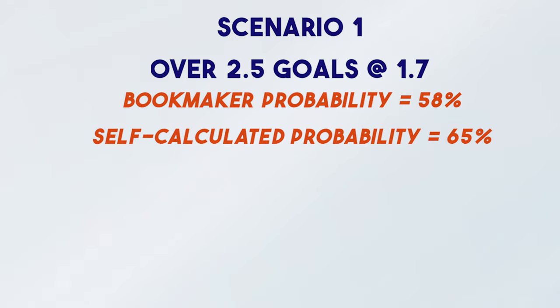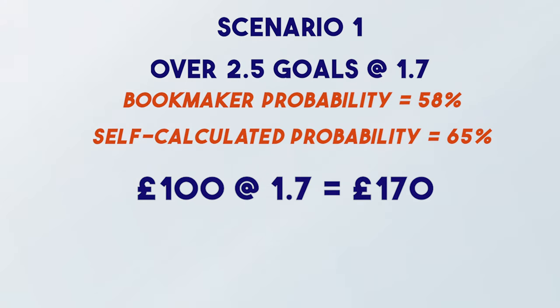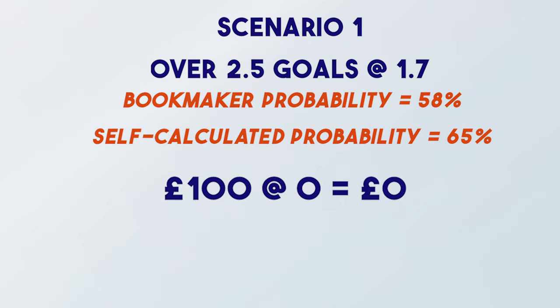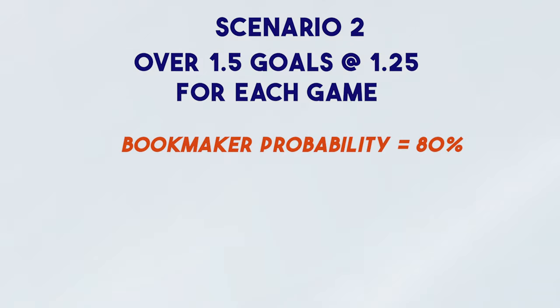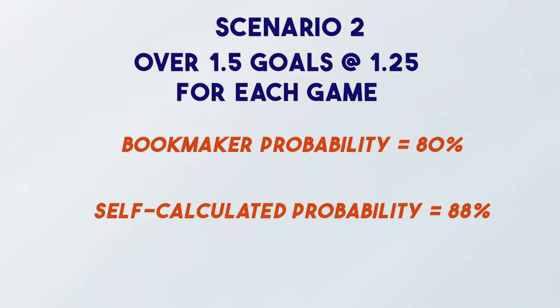Your own probability of over 2.5 goals is 65%. You back the game — put a 100-pound bet on to return 70 pounds profit — and it ends 1-1, so you lose your full 100-pound stake. Now consider two other games you think will also be high scoring. The odds offered for over 1.5 goals are 1.25 for both, meaning the bookmakers estimate an 80% probability. Your own calculations put both games at 88% — making these clear value bets.